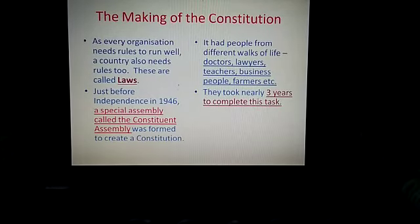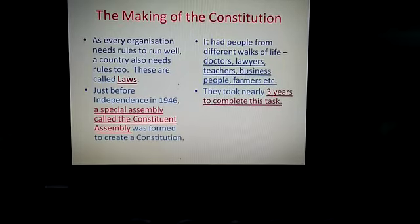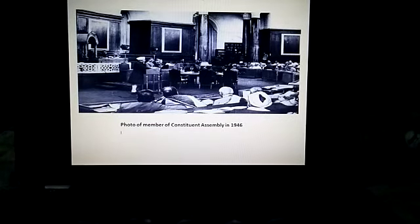The Constituent Assembly included people from different sections like doctors, lawyers, farmers, teachers, and businesspeople, to give their points of view and to discuss each part, each line, and each word of the new constitution. It took nearly three years to complete this task. This is the photo of the Constituent Assembly in 1946, and this same picture is there in your book also.